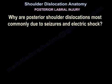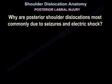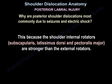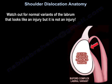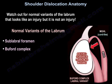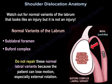Why are posterior shoulder dislocations most commonly seen in seizures and electric shock? Because the shoulder internal rotators — the subscapularis, the latissimus dorsi, and the pectoralis major — are stronger than the external rotators. Watch out for normal variants of the labrum that look like an injury but are not. Normal variants of the labrum are the sublabral foramen or the Buford complex. Do not repair them because the patient can lose motion, especially external rotation.